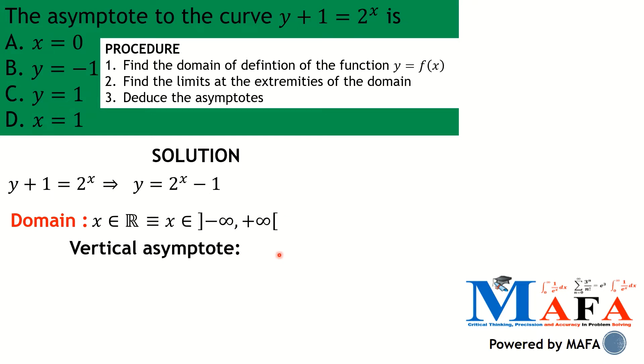After getting the domain, we need to compute the limits at the extremities so we can deduce our asymptotes. Before that, I'm going to explain the types of asymptotes that exist.